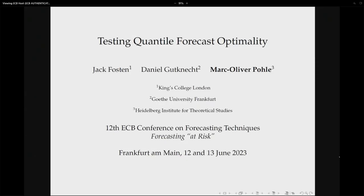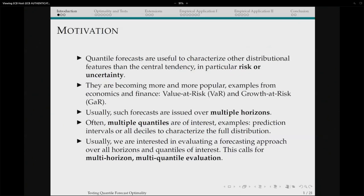The next paper is by Mark Oliver Paula from the Heidelberg Institute for Theoretical Studies, about testing quantile forecast optimality. As usual, there are 25 minutes for the presentation, 10 minutes for discussion, and 10 minutes for Q&A. Thanks to the organizers for this nice conference and for including papers on forecast evaluation. This is joint work with Jack Foston from King's College London and Daniel Gutknecht from Goethe University Frankfurt.